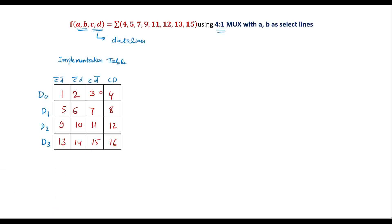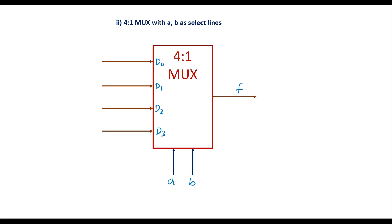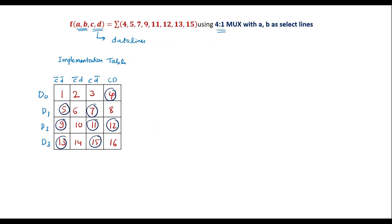Now we circle the given minterms: 4, 5, 7, 9, 11, 12, 13, and 15. These circles indicate the output is 1 for those minterms. We then concentrate on the circled cells to get expressions for the inputs D0 to D3 in terms of C and D. For D0, we find D0 = CD.